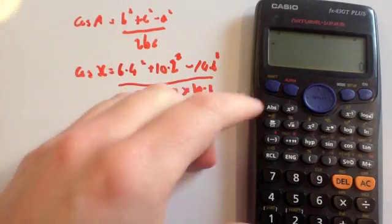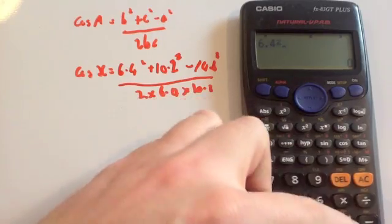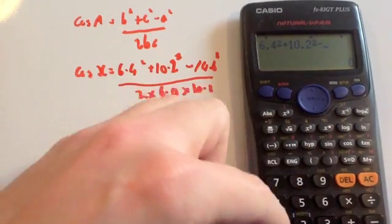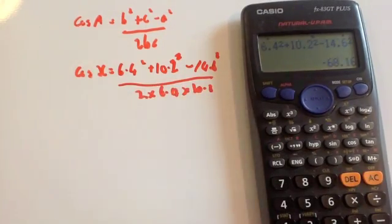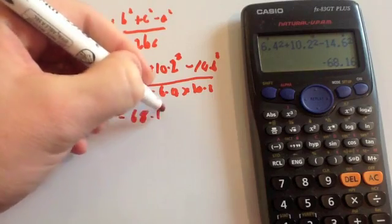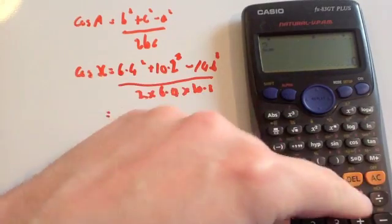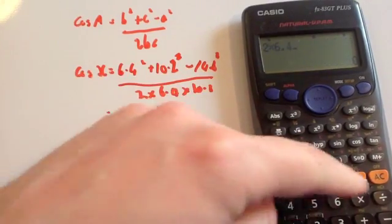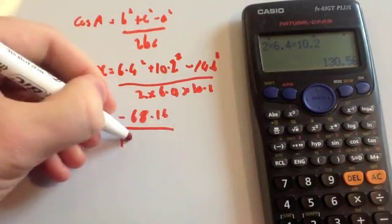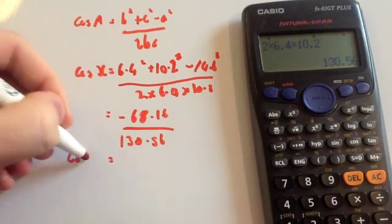I'm going to work out the top line and the bottom line separately. 6.4² + 10.2² - 14.6² = -68.16. Divide that by 2 × 6.4 × 10.2 = 130.56.